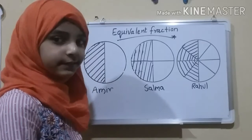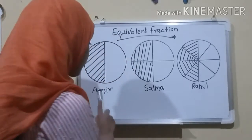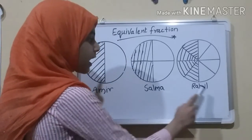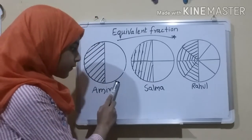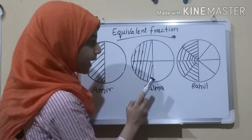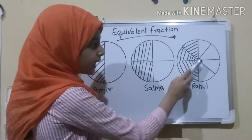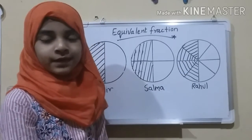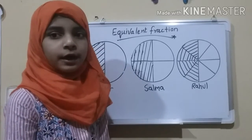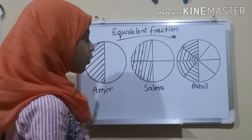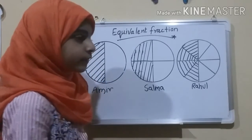First, let me tell you an example. Mr. Talwar has ordered 3 pizzas for Aamir, Salma, and Rahul. Aamir had 1 by 2, or half, of his pizza. Salma had 2 by 4 of her pizza and Rahul had 4 by 8 of his pizza. Now there is a big argument going on between the 3 of them about who has eaten the most and who has eaten the least amount of pizza.